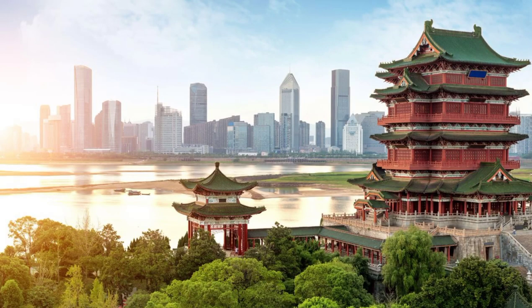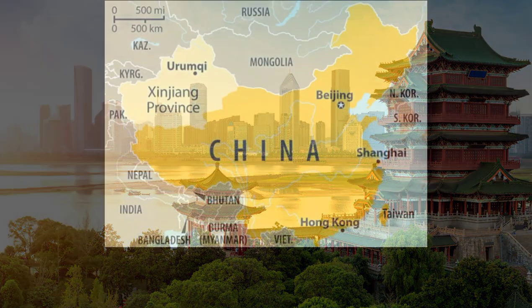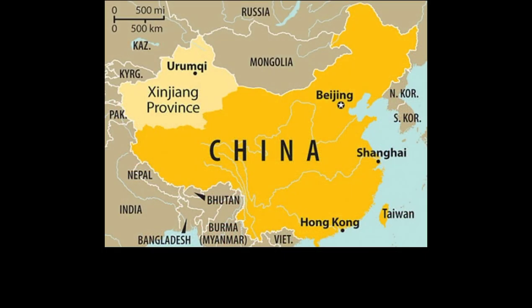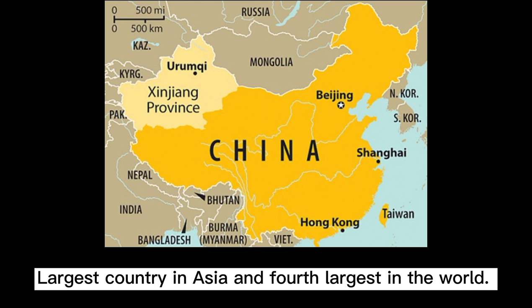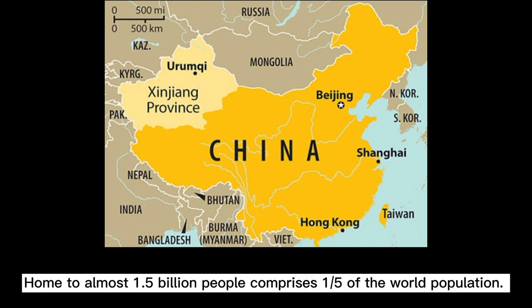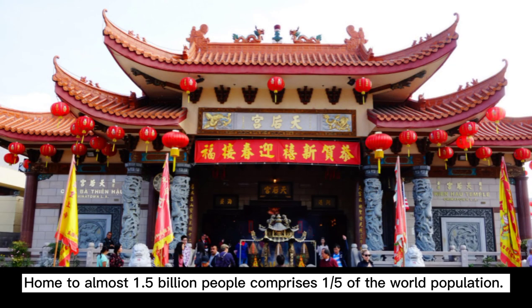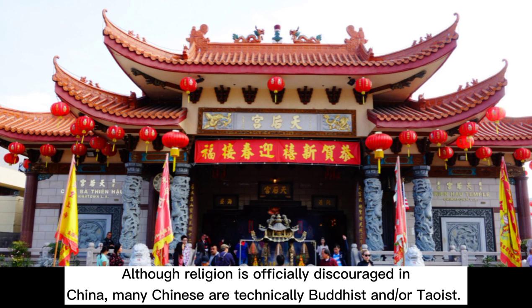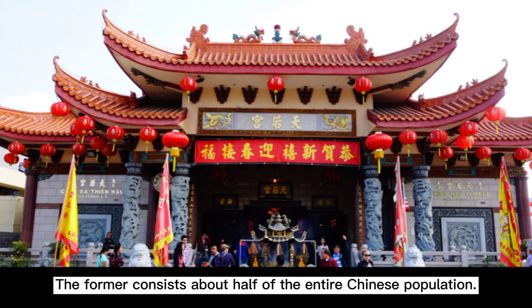Considered as the heart of East Asia, China is a communist state officially known as the People's Republic of China. In terms of land area, it is the largest country in Asia and the fourth largest in the world. It is also home to almost 1.5 billion people, comprising one fifth of the world's population. Although religion is officially discouraged in China, many Chinese are technically Buddhist and/or Taoist.